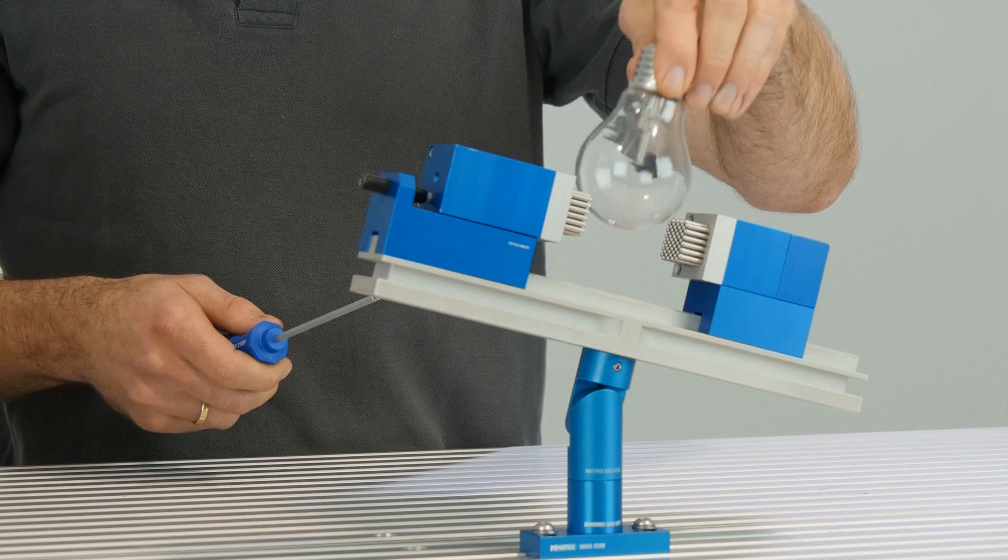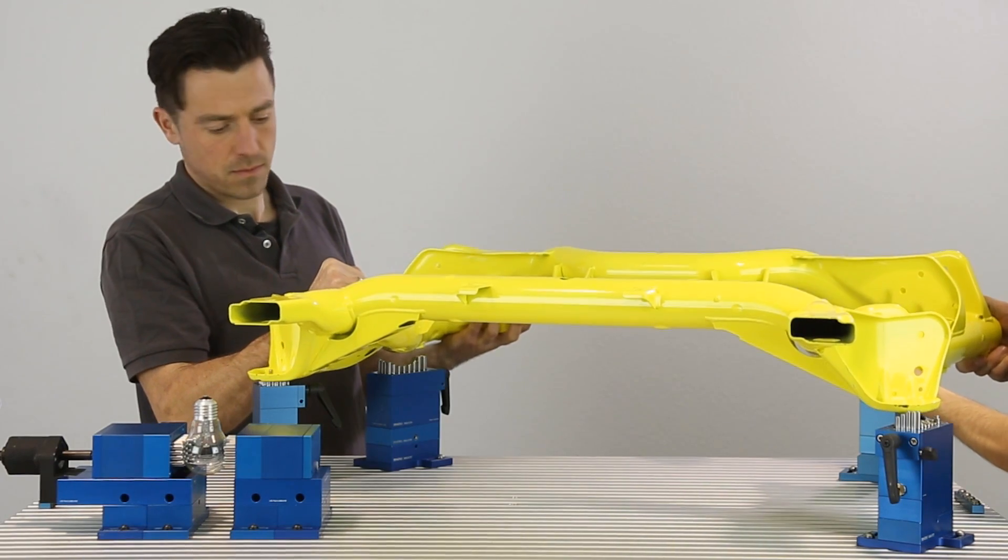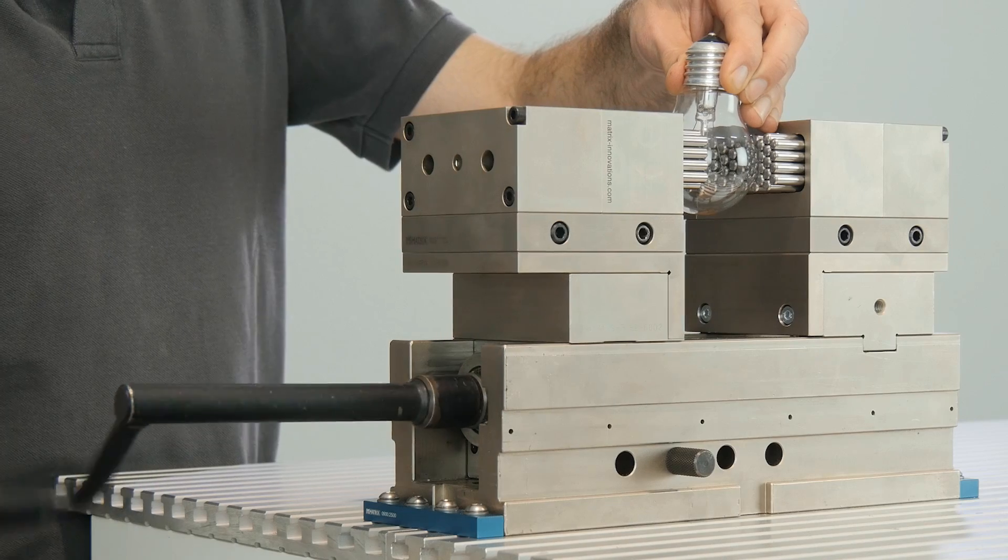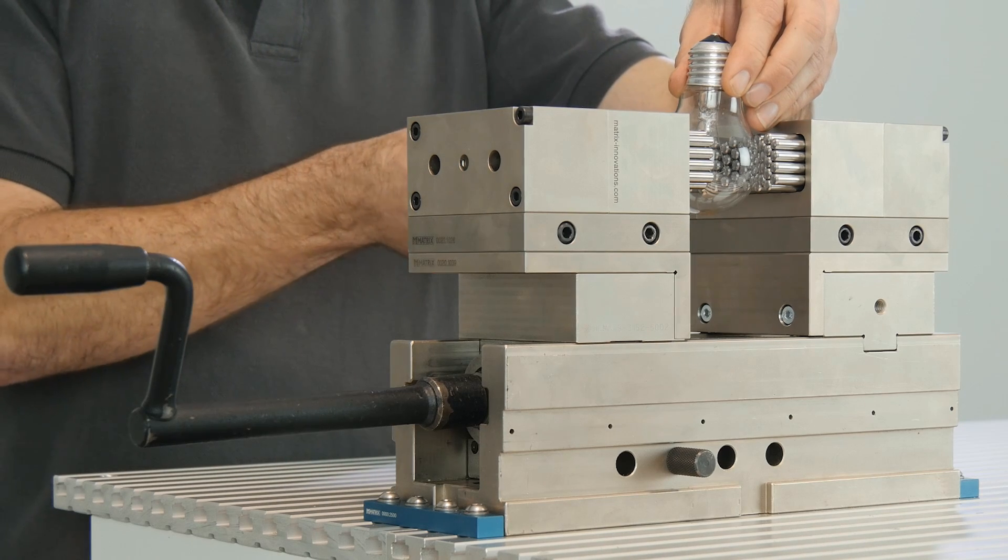Whether you have a little bulb or a huge metal piece, matrix clamping systems make perfect form fit with only the very least clamping force needed to secure even sensitive surfaces.